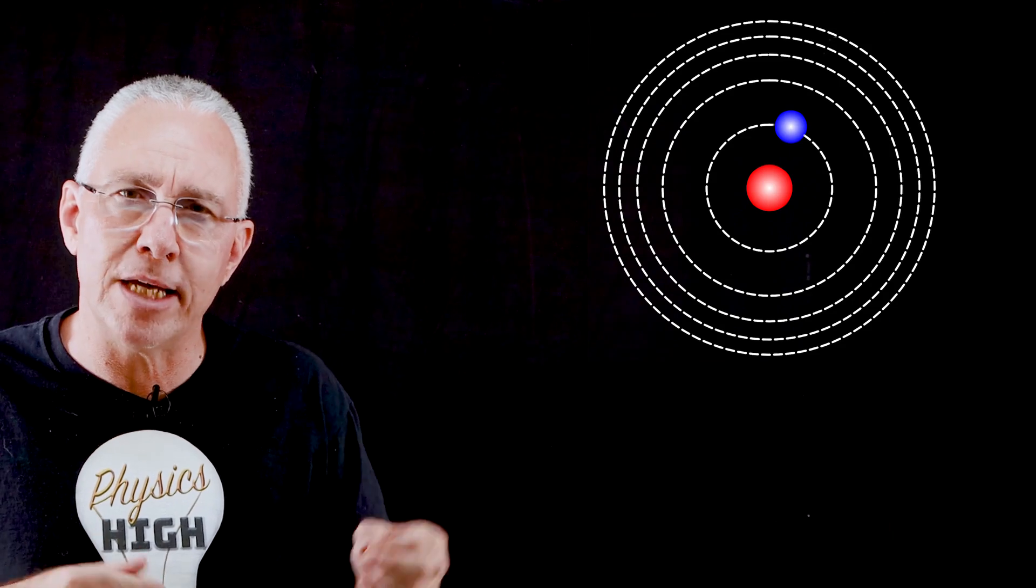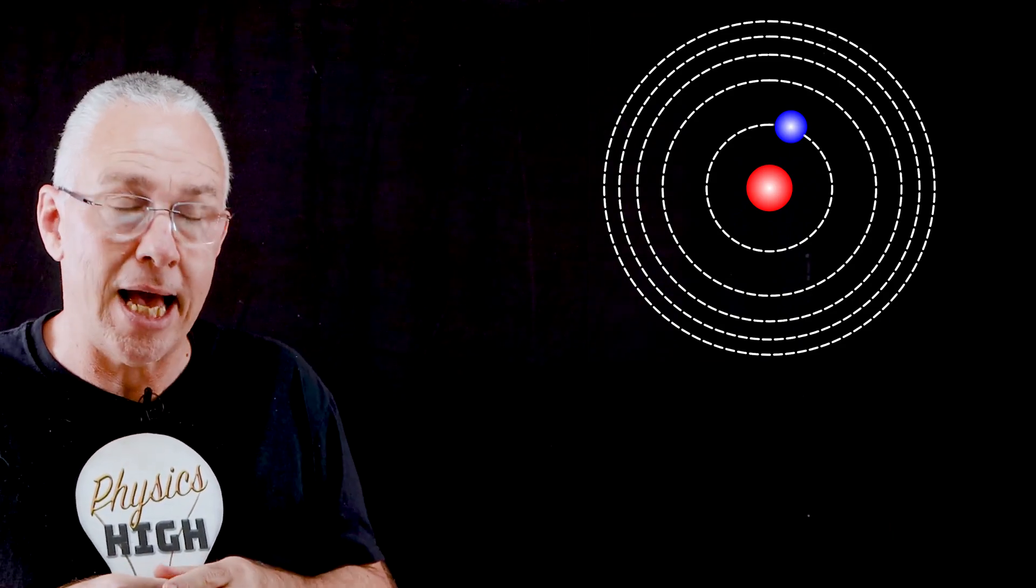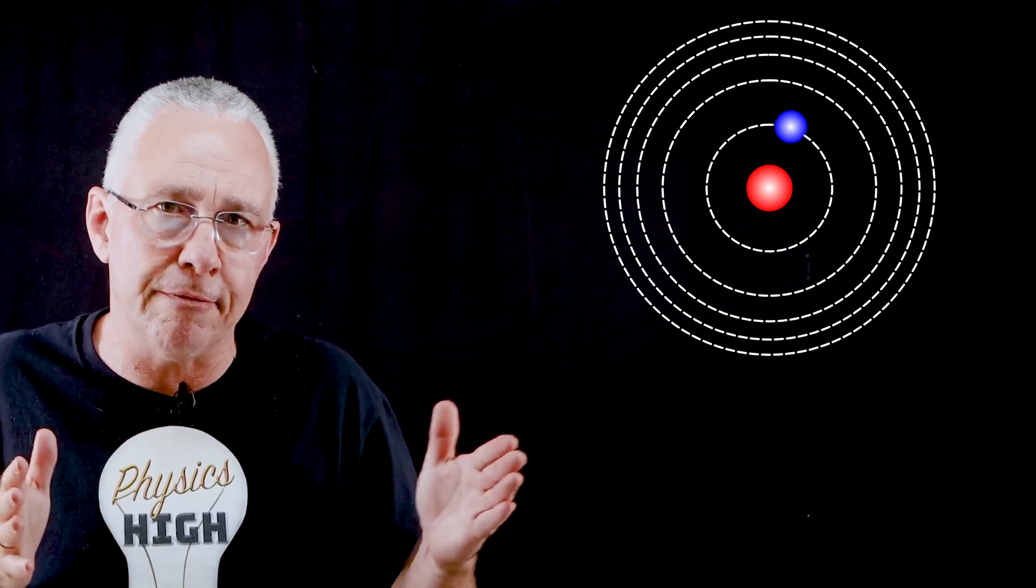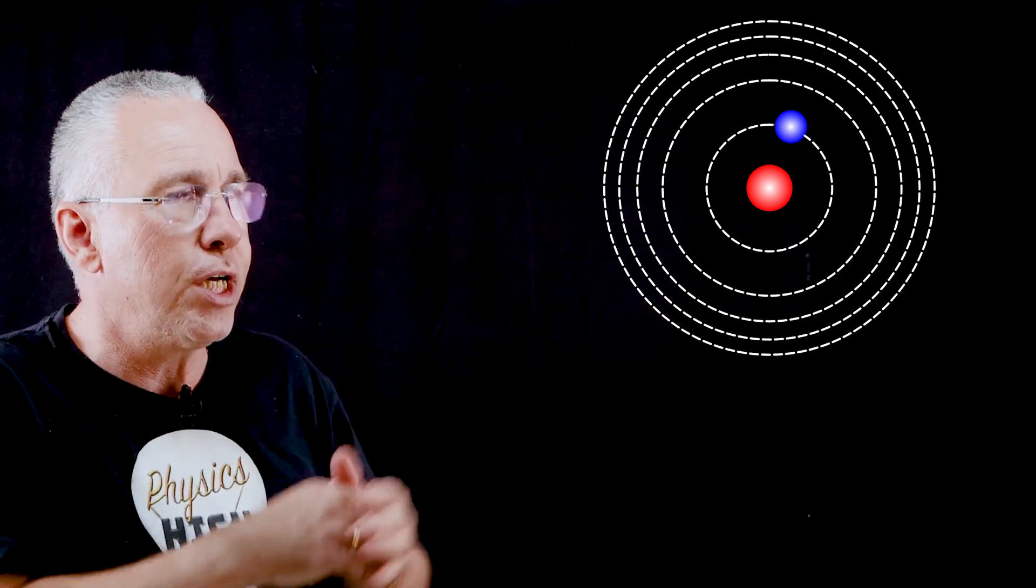To understand that, we need to understand how light interacts with an atom. And what I have is a model of the hydrogen atom that is referred to as the Bohr Rutherford model of the atom. That is, it's a planetary model where the electrons are in orbit around a central nucleus. And the electrons can only exist in discrete energy levels, or sometimes referred to as shells.